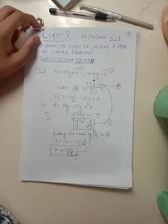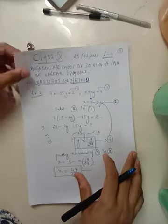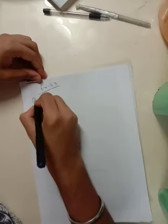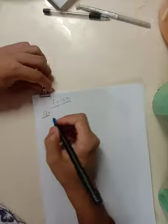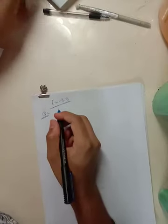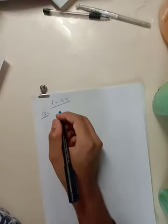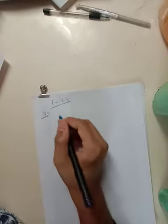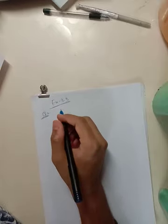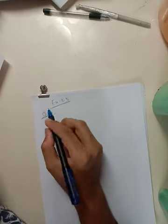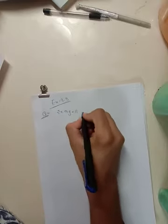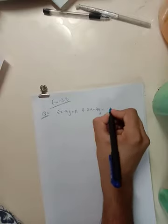So let's consider another example. In your NCERT exercise 3.3 there is one question, question number two, which is quite just like another questions but I am taking this because it has got a unique way. The question says solve 2x plus 3y equals to 11 and 2x minus 4y equals minus 24.